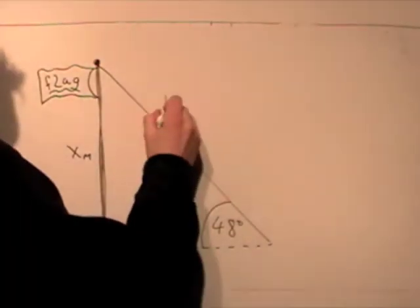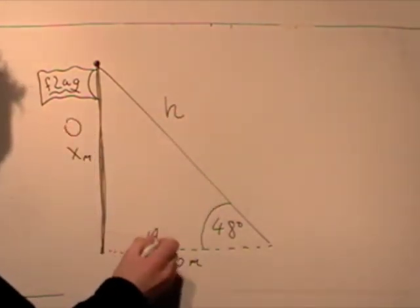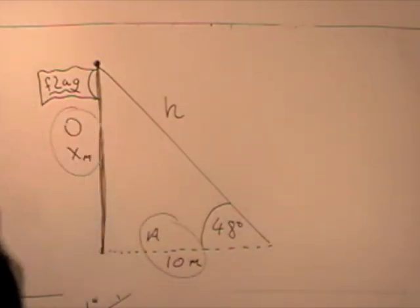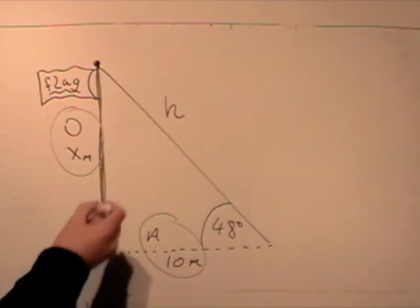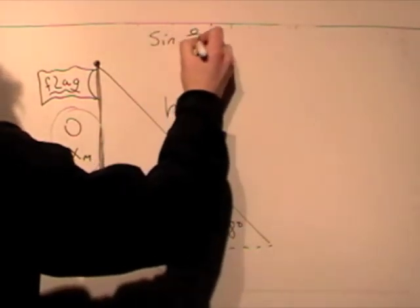Which is o, which is h, which is a? We certainly know that the line is h, the o is opposite the 48, and the a is the 10 meters. So we have the adjacent and we're looking for the opposite. Which of our sine, cosine, or tan has o and a in it? Is it sine o over h? No. Is it cosine a over h? No.